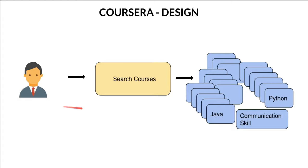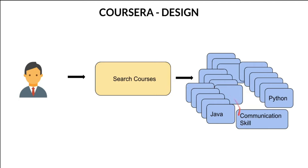I could see there are millions of users, there are some search modules, and behind the scenes there are a lot of courses. Whenever people want to register and search for a course, once they find the course they can stream the courses and then start learning. This is a very high level bigger picture about Coursera.